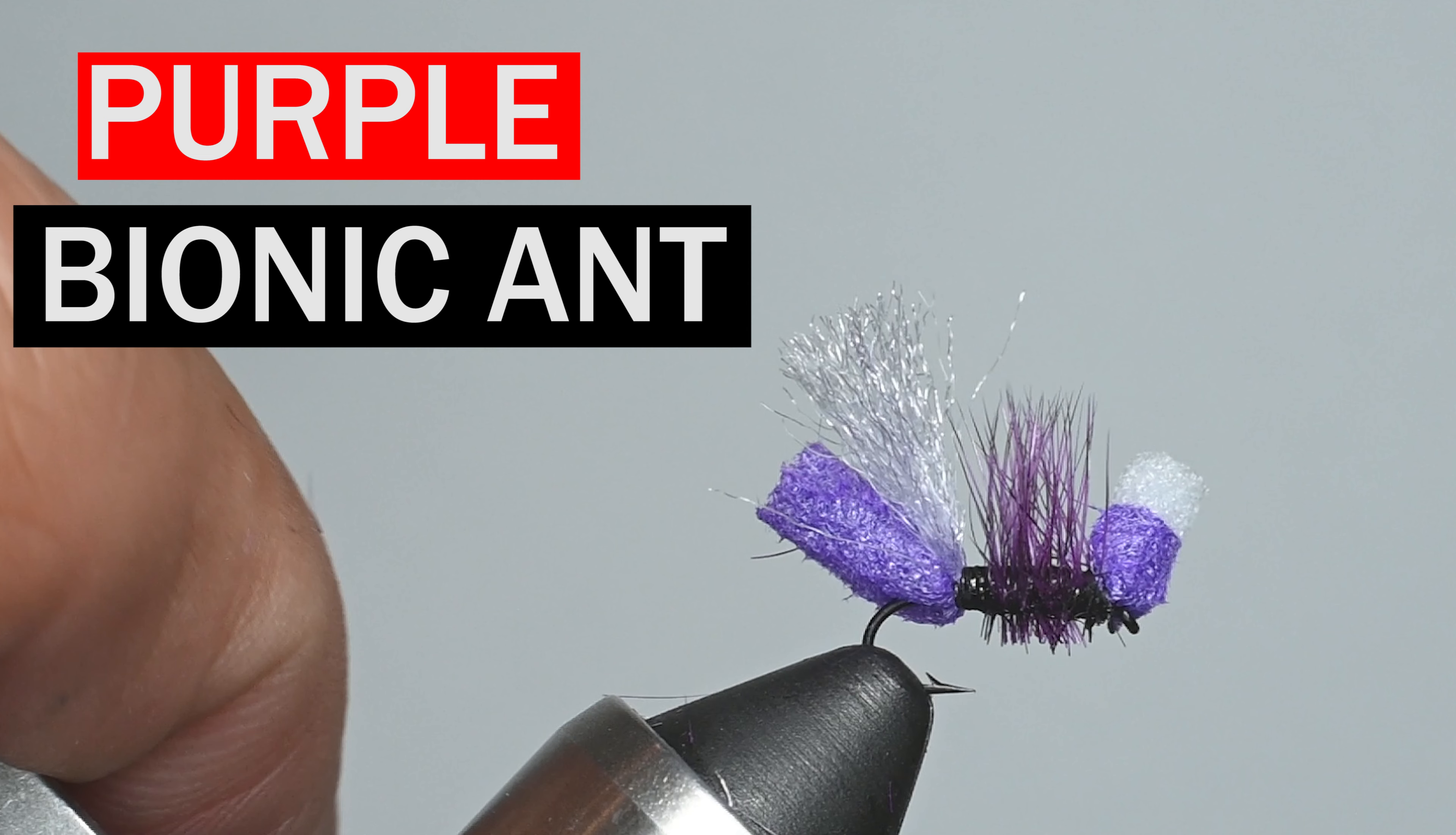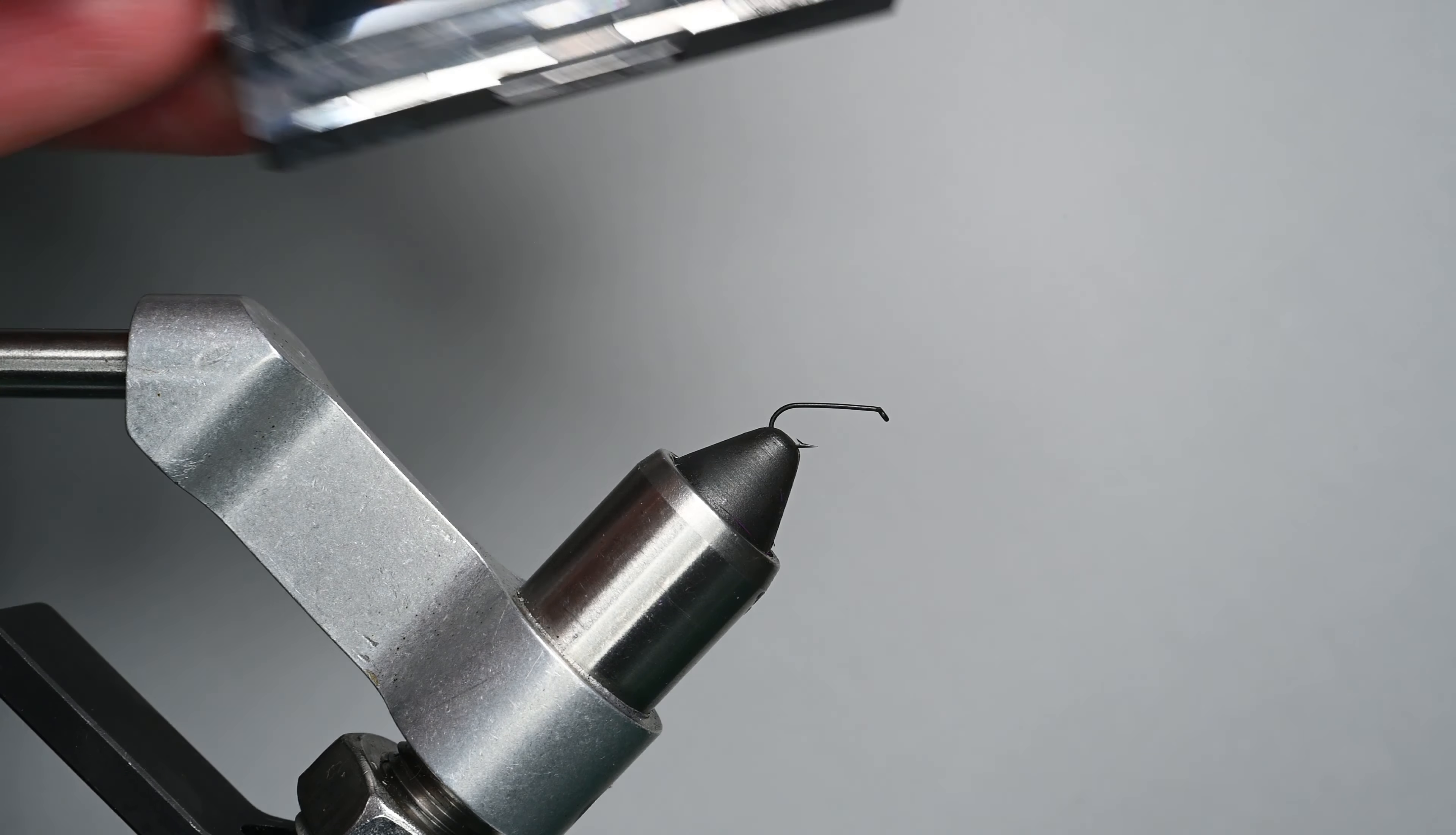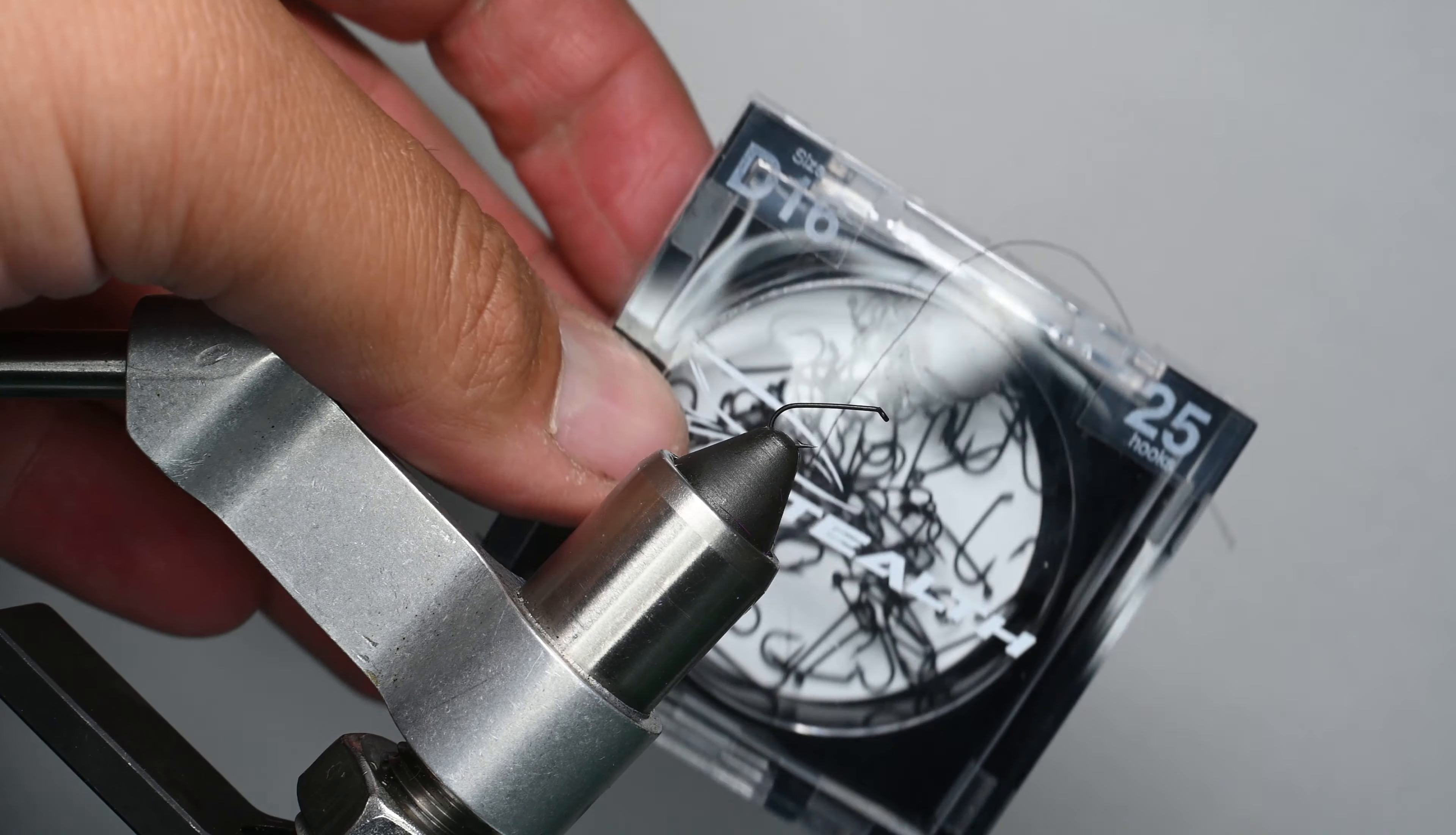What's up everybody, Sven Diesel here. We're going to be tying up a purple bionic ant. This is a Lance Egan pattern. The bionic ant has been super effective for me over the years. Let's get started with the dry fly hook.